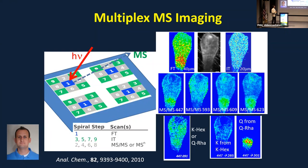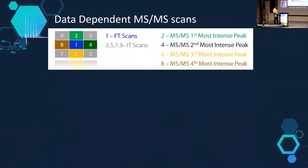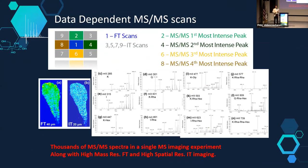We can also do MS/MS imaging or multiplex imaging by dividing each pixel into smaller pixels. With accurate mass alone we cannot differentiate kaempferol hexosides and quercetin rhamnosides — they have the exact same mass — but with MS/MS imaging from kaempferol fragments you can see kaempferol hexosides are in the upper epidermis, while quercetin rhamnosides from quercetin fragments are only in the bottom epidermis. You can also do data-dependent MS/MS while acquiring the imaging to trace back and identify compounds.